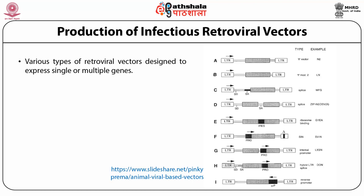Through transfection we can produce infectious viral vectors for further applications. Commercially, different types of viral vectors using retroviruses have been designed, expressing single or multiple genes. They are commercially available or can be produced in the laboratory, which is a very tedious and laborious job requiring expertise. Different steps for preparation or designing of these vectors using different genes are listed in the figure.